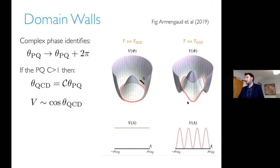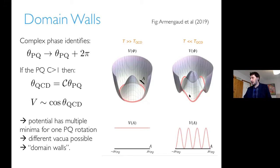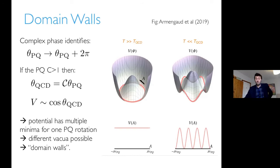Using C here — often called N or N_DW for number of domain walls — the potential has N different minima as the theta field makes a single transit around the origin in Peccei-Quinn space. So the potential has multiple minima for one PQ rotation, giving different possible vacua and domain walls between these vacua. The field falling into different vacua can't decay classically between them. Domain walls are a disaster: their energy density scales like a to the minus two and would dominate the energy density of the universe.